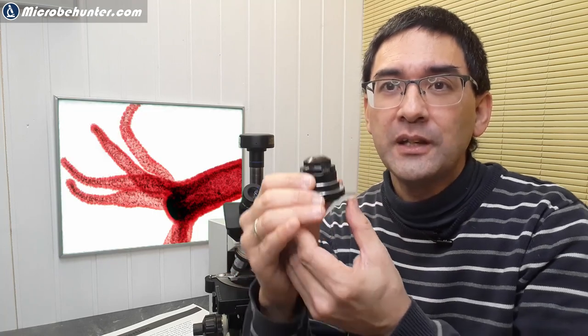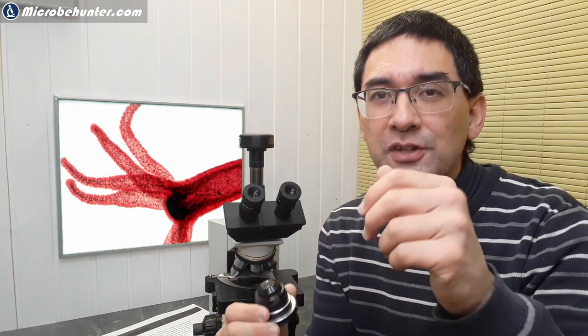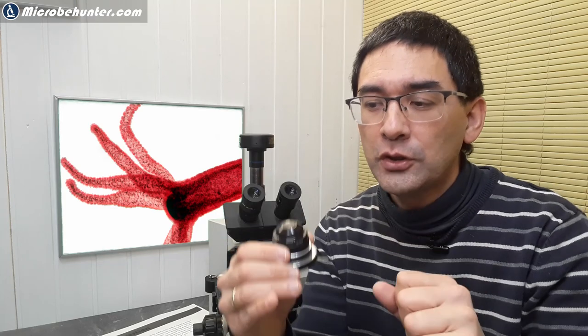When you're opening and closing the condenser like this, you're not focusing it. You're just changing the diameter of the aperture. Focusing the condenser is done by raising and lowering it, and there is a knob that you can turn to actually raise and lower it.